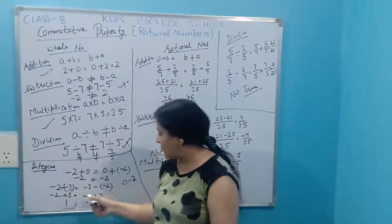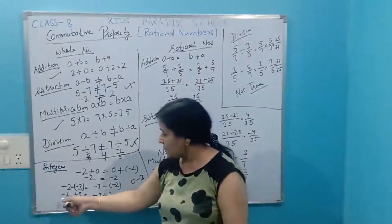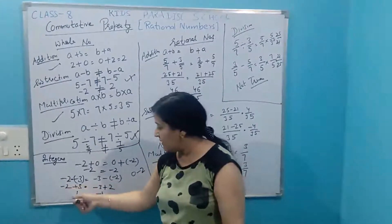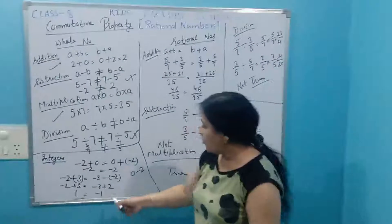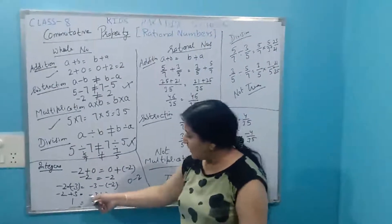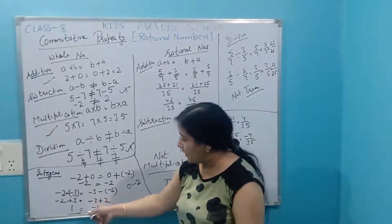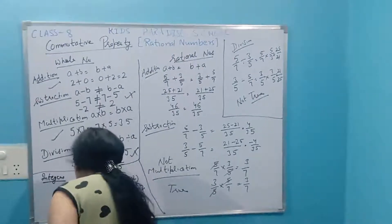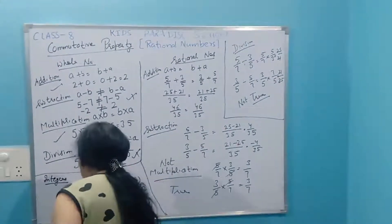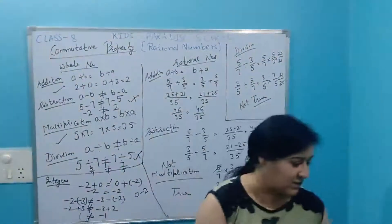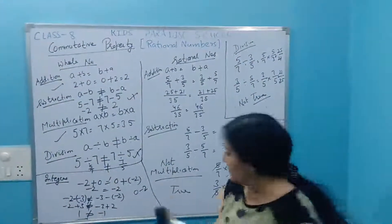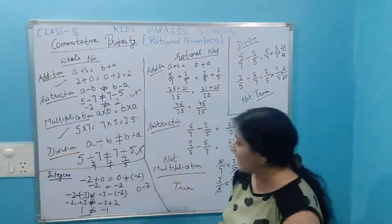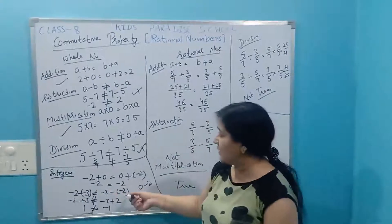Here minus minus becomes plus. So minus two plus three is one (positive), and minus three plus two is minus one (negative). One is not equal to minus one. It means in the case of integers under subtraction, commutative property is not true, but under addition a plus b equals b plus a.